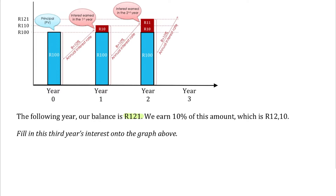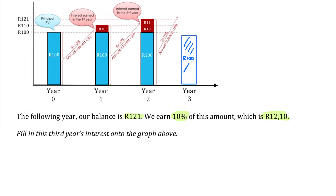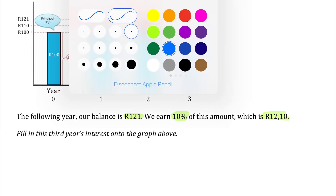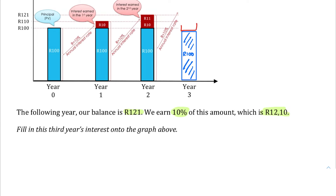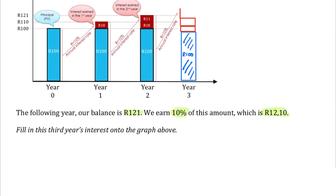In the following year our balance is R121, so we earn 10% of that amount. 10% of R121 is R12.10. Let's draw that on the graph. We start with the R100 original investment, then add the two lots of interest — R10 and R11 — and now we add on R12.10. So we had R10 in year one, then R11, now R12.10 — each year the interest grows.